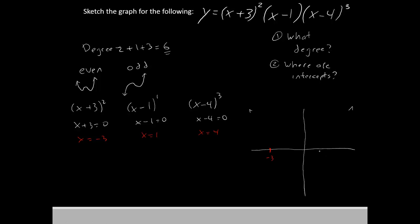Let's go ahead and mark those down now. Here's negative 3, here's our 1, and somewhere over here we'd have 4.